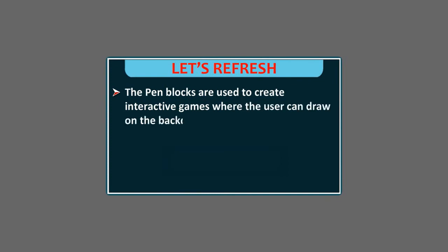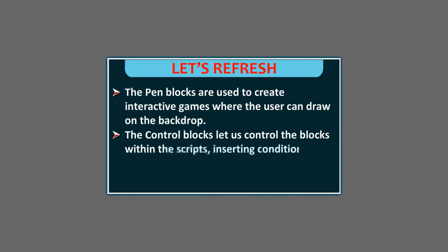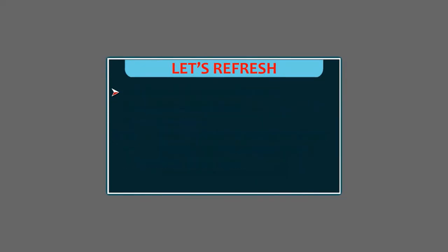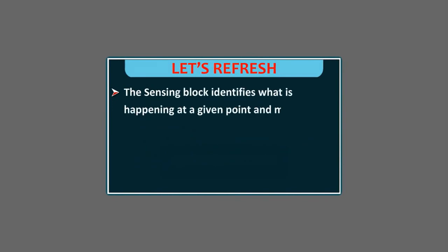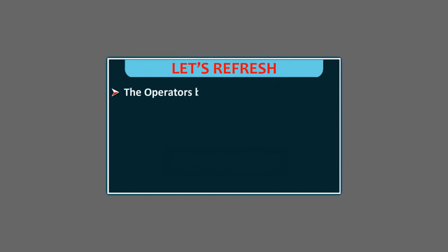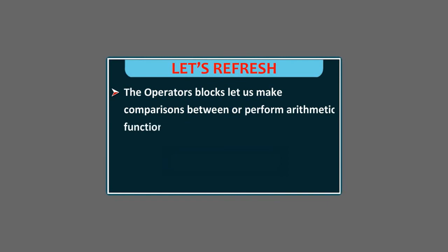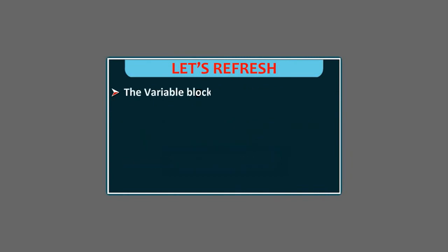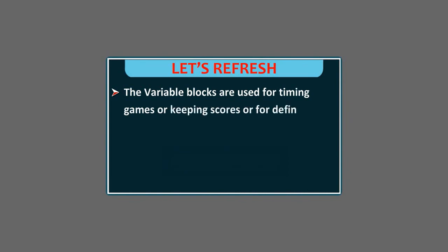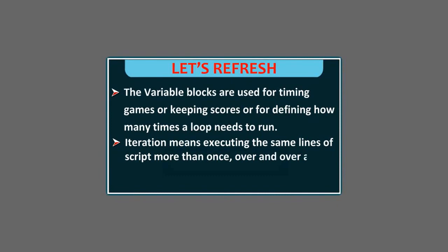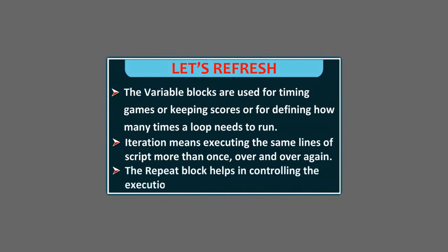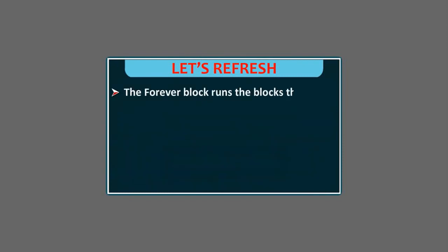Let's refresh. The pen blocks are used to create interactive games where the user can draw on the backdrop. The control blocks let us control the blocks within the scripts, inserting conditional statements, loops, repeats and pauses. The sensing block identifies what is happening at a given point and makes the sprites or background respond. The operators blocks let us make comparisons between or perform arithmetic functions on different values, and can be used in conjunction with data blocks or sensing blocks. The variable blocks are used for timing games, keeping scores, or defining how many times a loop needs to run. Iteration means executing the same lines of script more than once, over and over again. The repeat block helps in controlling the execution of the program. The forever block runs the blocks that are put inside it again and again. Scratch also supports conditionals or decision-making constructs.